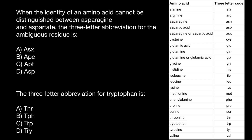Why is asparagine ASN and not ASP? Because aspartic acid also has the first three letters ASP. So how do you memorize that asparagine is ASN and not ASP? This is not a scientific method, just a mnemonic technique. Aspartic acid consists of two words — aspartic and acid — while asparagine is one word. So aspartic acid wins the abbreviation ASP, and asparagine gets ASN.